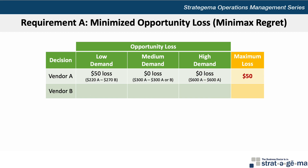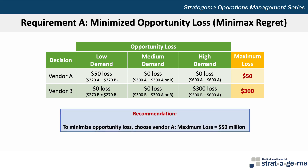Now let's look at vendor B. If we select vendor B and demand is low, there's no loss. The payoff generated from selecting vendor B is the maximum payoff of $270 million, so Southland won't regret selecting vendor B if demand is low. If Southland selects vendor B and demand is medium, there is no loss incurred because the $300 million payoff is the same whether A or B is selected. Finally, if demand is high and vendor B were selected, then Southland would have regretted that decision because the $300 million payoff is less than the $600 million maximum payoff that would be earned if high demand were predictable and vendor A would have been chosen. Thus, the maximum loss of selecting vendor B is $300 million, and the recommendation to management is to select vendor A if Southland wants to minimize or limit the opportunity loss.